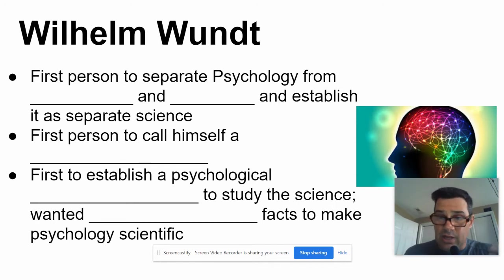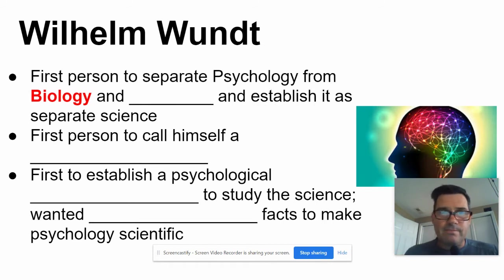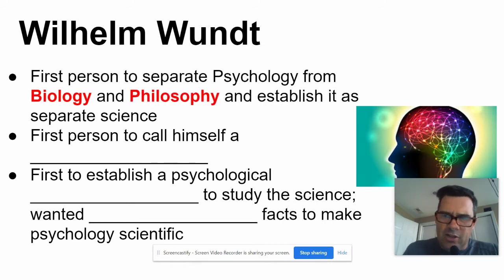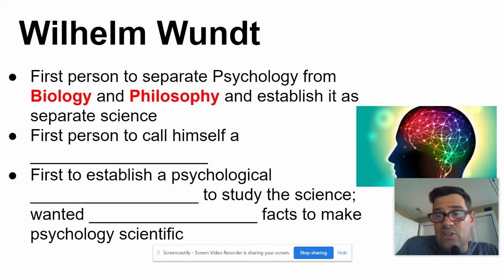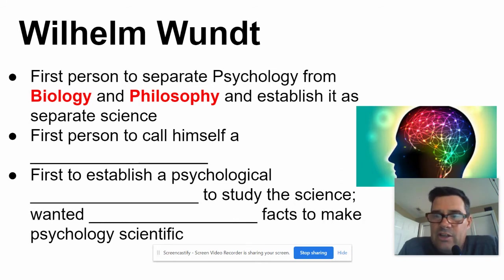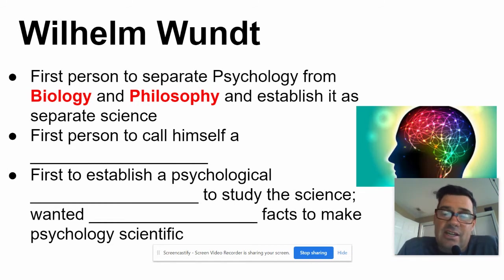He becomes the first person — and hence why he's a founder of psychology — to separate psychology from two other branches of science: biology and philosophy. Prior to this, psychology was seen as maybe a subset of biology because it has to do with behavior, or philosophy because of how it explains how humans act and why we do things. He establishes psychology as a separate science — that's kind of his big calling card — and therefore more people after him become what we now call psychologists.